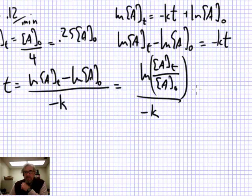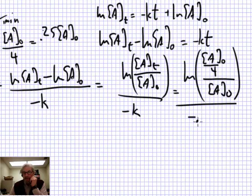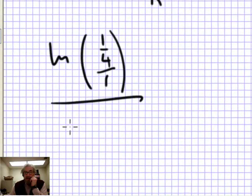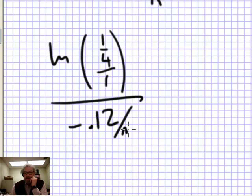Plugging in numbers: this is the natural log of (initial concentration / 4) divided by initial concentration, over negative 0.12 per minute. This works out to the natural log of 1/4 over 1, divided by negative 0.12 per minute, and this comes out to 12 minutes.